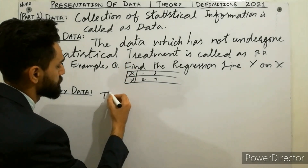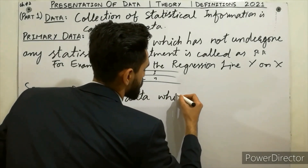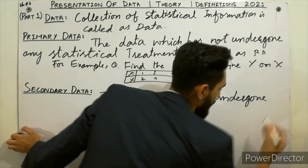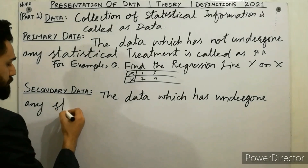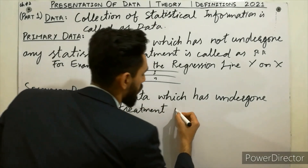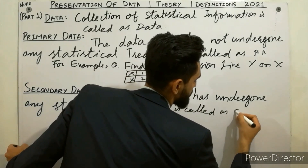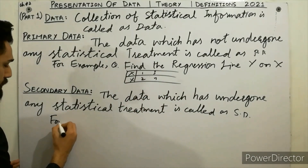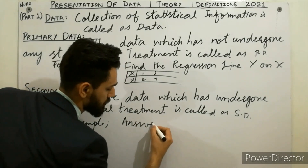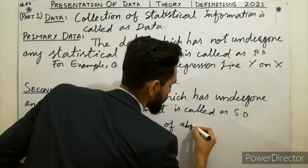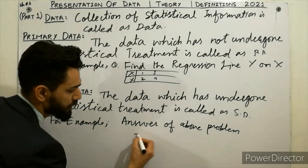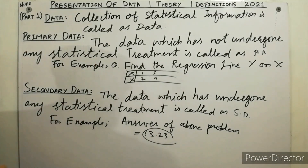Secondary data is the opposite. The data which has undergone any statistical treatment is called as secondary data. For example, after solving the above regression problem, if the answer comes out as 13.23, that result is called secondary data.